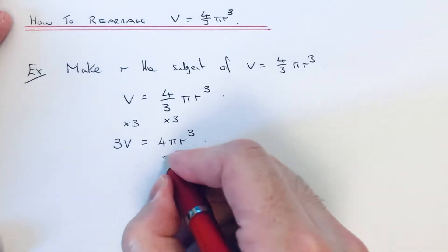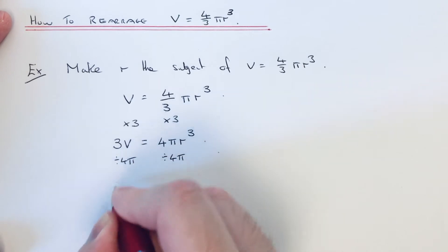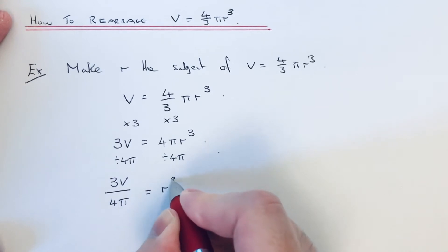So we're going to divide both sides by 4π. So this will give 3V over 4π equals r³.